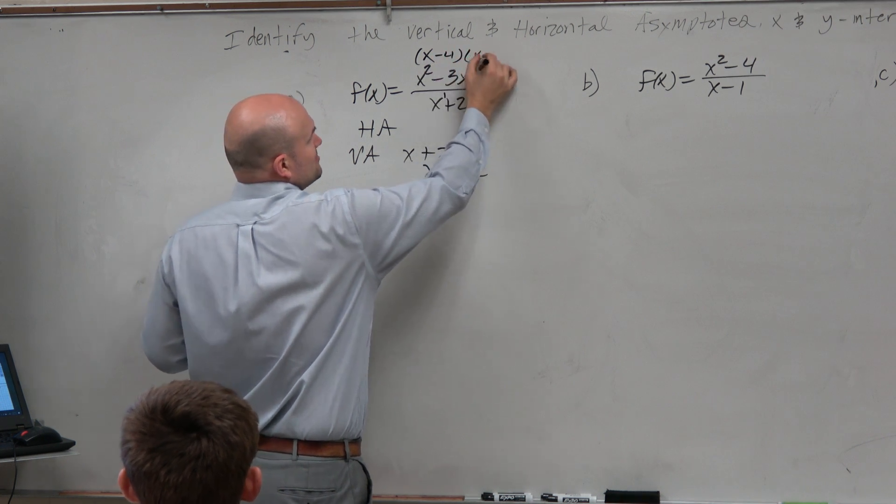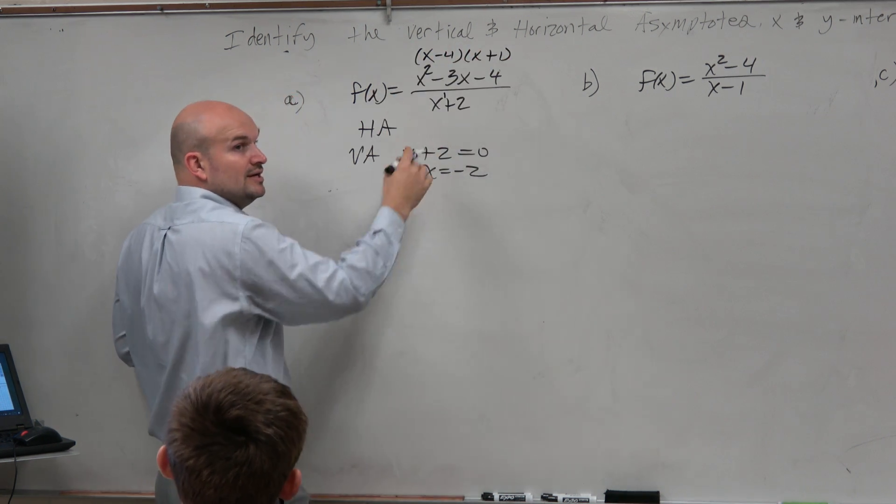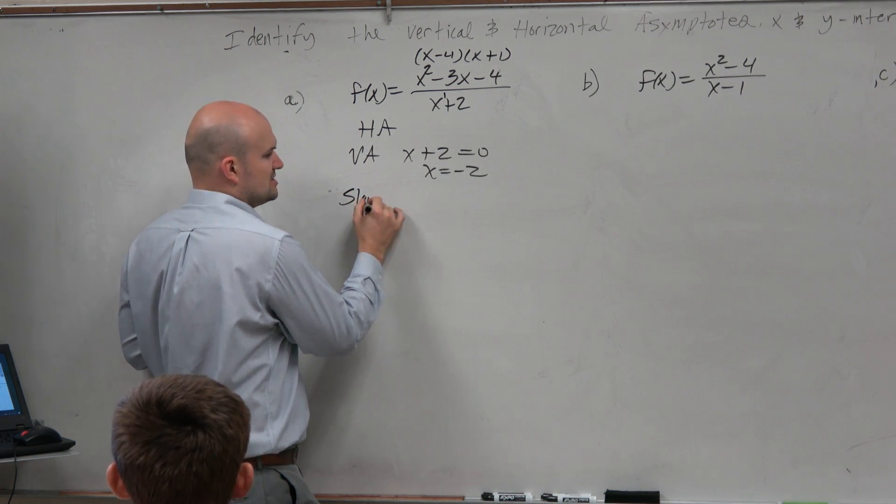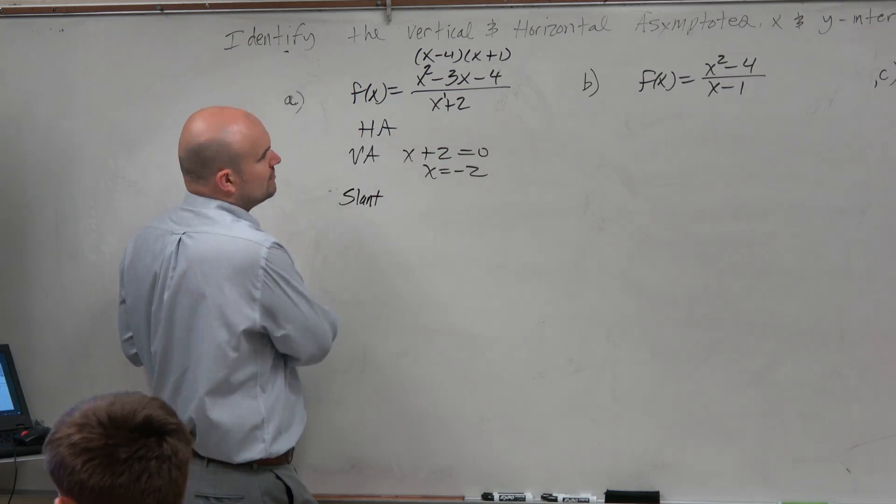So this is x minus 4 times x plus 1. OK, it doesn't get divided out. So therefore, that means I have a slant asymptote, which I'll just call slant or oblique asymptote, as I noted in your notes.